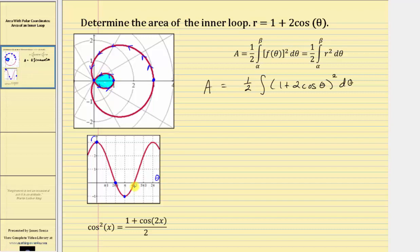And notice at four thirds pi radians, we are back at the pole. So we have an option here: we can integrate from two thirds pi radians to four thirds pi radians, which traces out the entire loop, or we could integrate from two thirds pi radians to pi radians and then double the area, because that interval traces out half of the loop. Let's go ahead and do that — integrate from two pi divided by three radians to pi radians and then double the area, so we multiply by two.